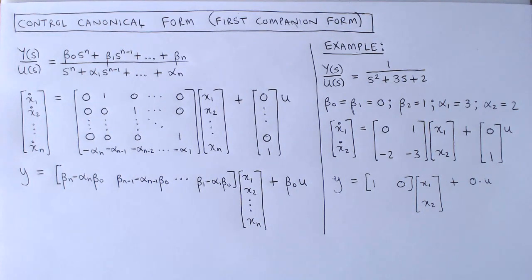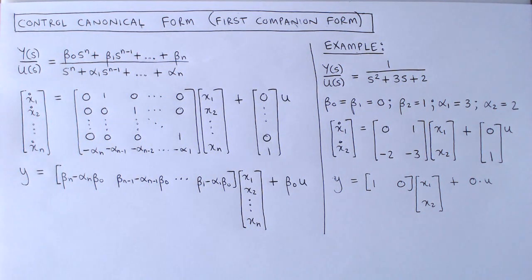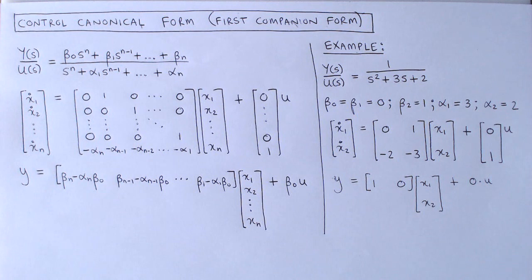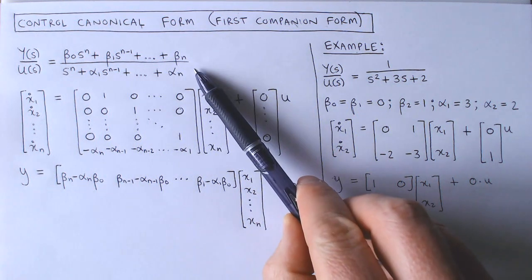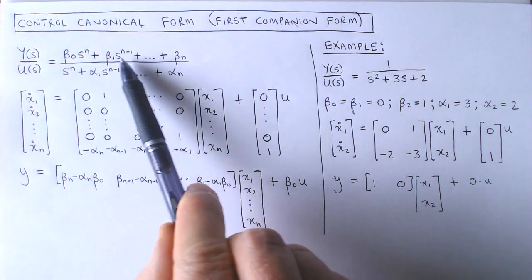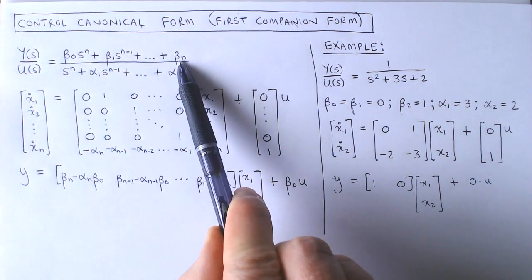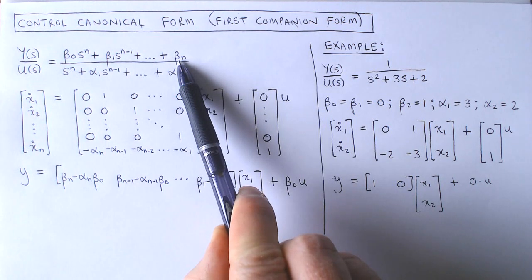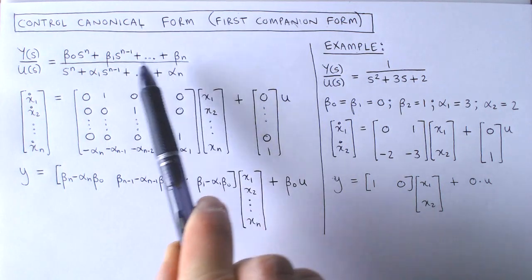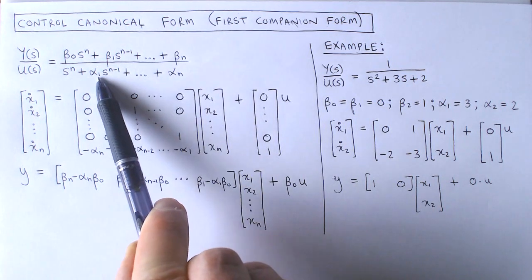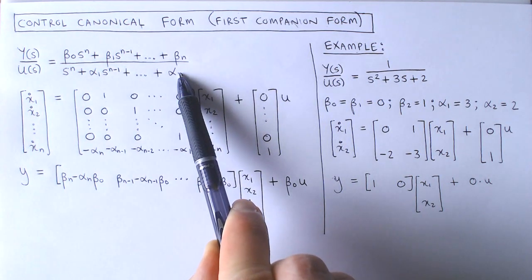The first standard form we look at is the control canonical form, also called the first companion form. Suppose we have a transfer function model of an nth order system with beta 0 to beta n as the coefficients of the numerator, and alpha 1 to alpha n as the coefficients of the denominator.